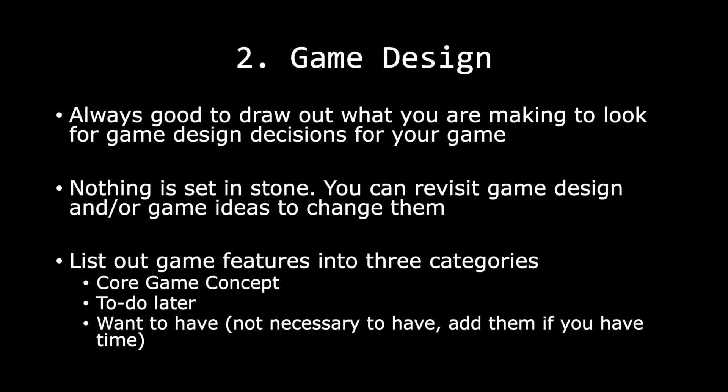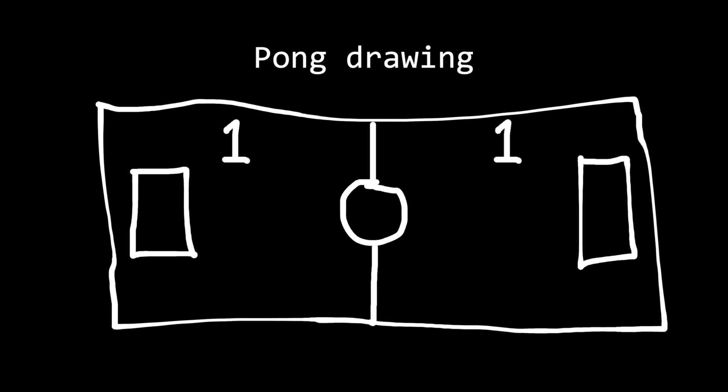I like to list out game features into three categories. The first category is core game concept. The next is to-do later — for example, towards the end of the project. And lastly, a list of things I want to do if I have time — basically things I can live without if they are not in my game. So this is basically our game design: we have a ball in the middle and two paddles with score on each player's side.